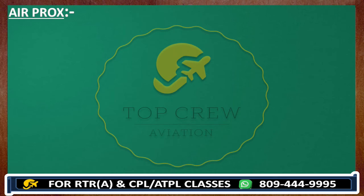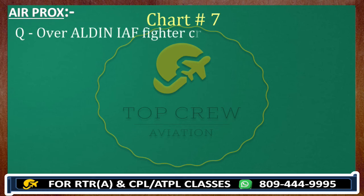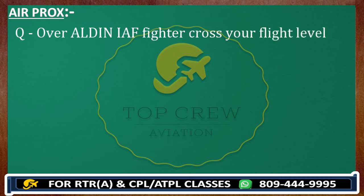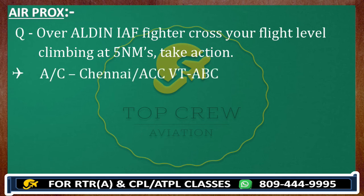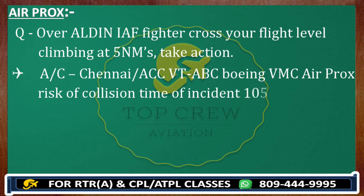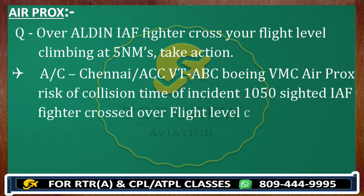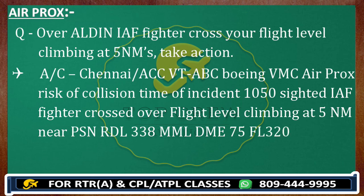Next question: over Alden on chart number seven, an Indian Air Force fighter crossed your flight level climbing at five nautical miles — take action. Since it is in the air, it is AIRPROX. Call: 'Chennai Control, Victor Tango Alpha Bravo Charlie, Boeing, VMC, AIRPROX risk of collision. Time: 1050. Sighted Indian Air Force fighter crossing our flight level climbing, five nautical miles. Position: radial 338, MMK, DME 75, flight level 320, TAS 320 knots.'